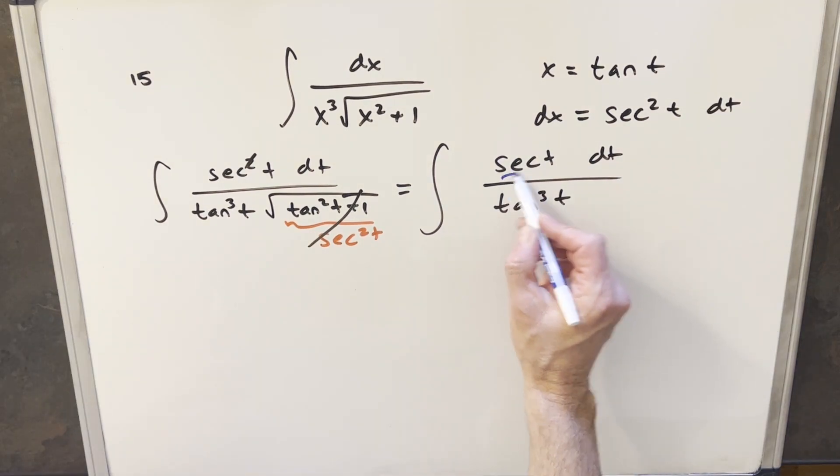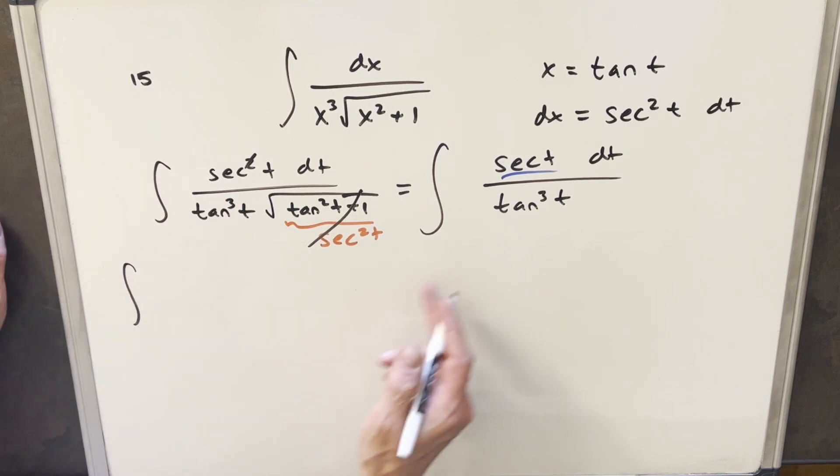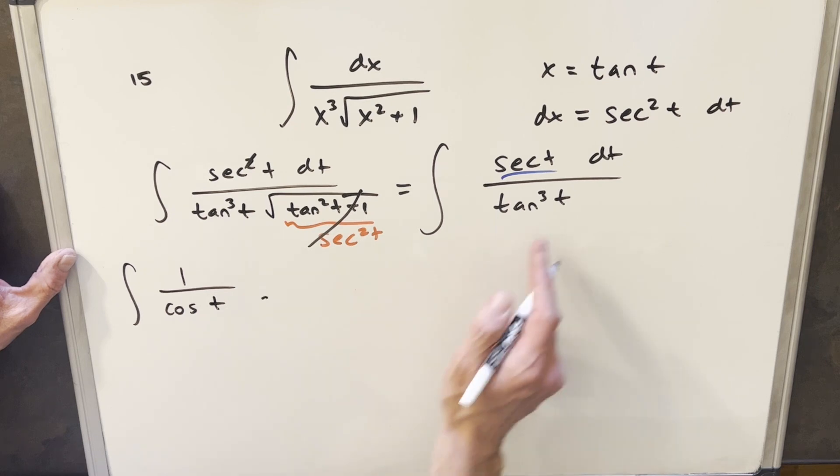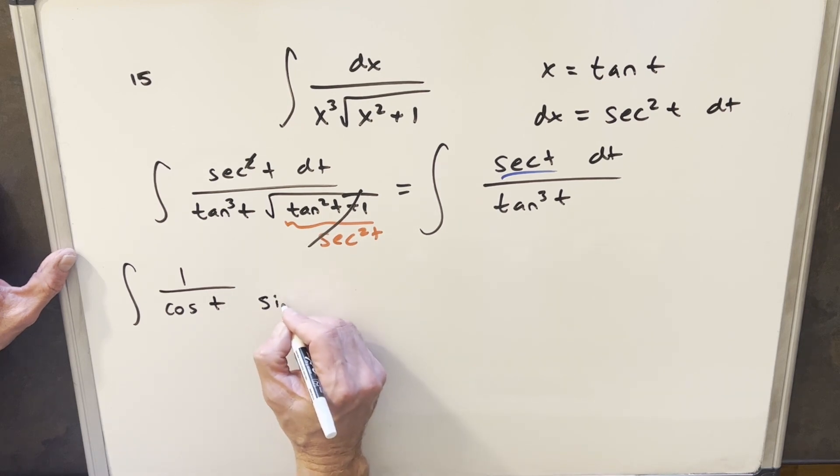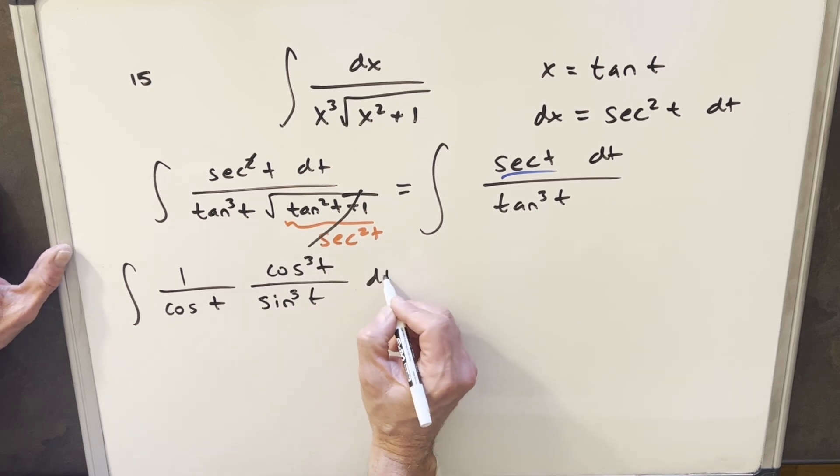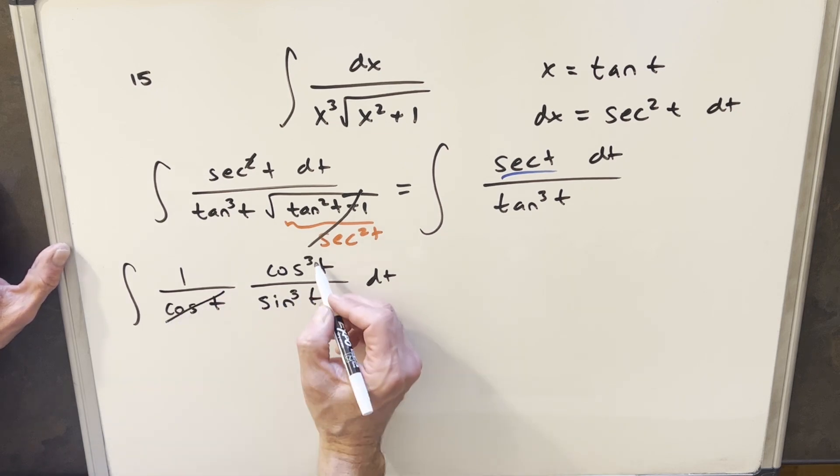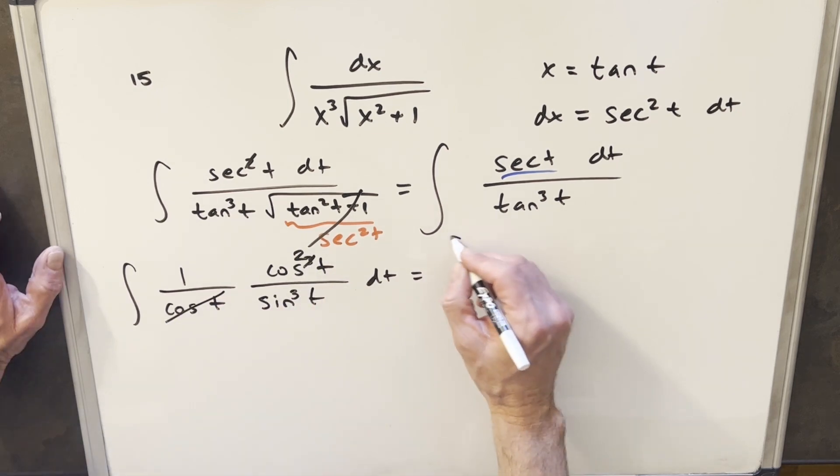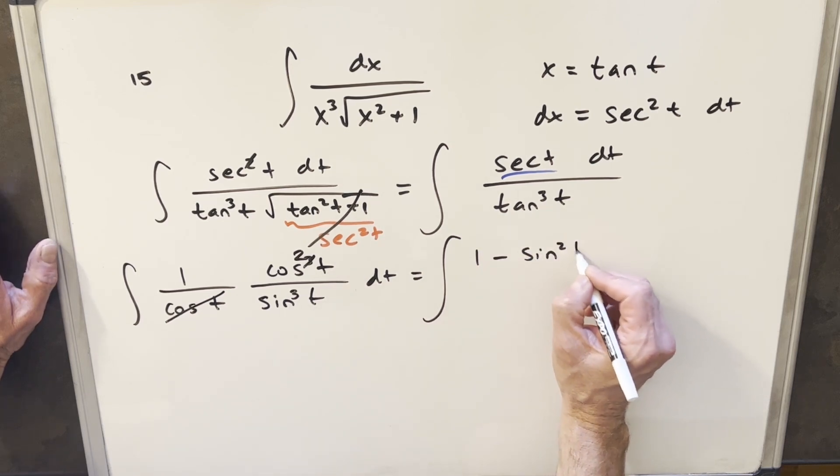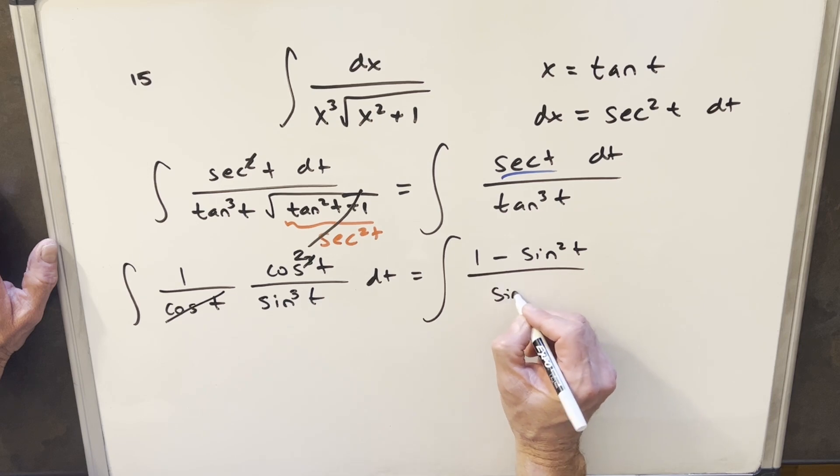And at this point, it's kind of too bad I don't still have a secant squared t in the numerator because I could do another substitution, but that's not going to work here. So what I'm going to do is I'm going to write this in terms of sines and cosines. So my secant t, I'm just going to write as 1 over cosine t. For tan cubed t, I'll have sin cubed t in the denominator, and then I'll bring a cosine cubed t into the numerator. But I can cancel this with one of these, leaving me with cosine squared here. Then what I'll do is when I rewrite this for cosine squared t, I can write this as 1 minus sine squared t over sine cubed t.